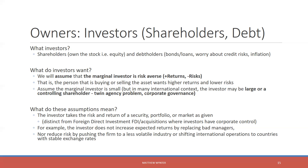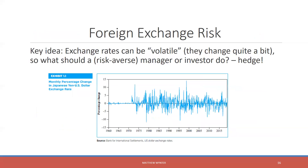So what can an investor do when facing all these different types of risks? Well, you can hedge. The first risk you'll hedge is your foreign exchange risk, and the key idea is that exchange rates can be volatile — they change quite a bit. If I'm a risk-averse manager or investor, I'm going to want some way to mitigate this risk. What I'm showing you is the monthly percentage change in Japanese yen versus the dollar, and you can see it's incredibly volatile. Given the volatility of exchange rates, you would want to hedge them. But remember, there are many other market frictions that will impact your investment.